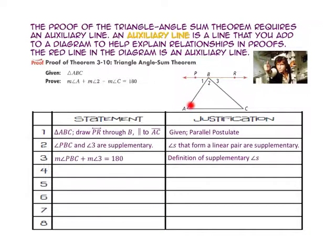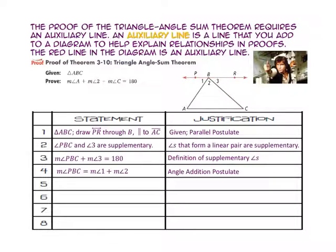Now let's substitute the measure of angle 1 and the measure of angle 2 for the measure of angle PBC. We will state that the measure of angle 1 plus the measure of angle 2 plus the measure of angle 3 equals 180 degrees. That's the substitution property.